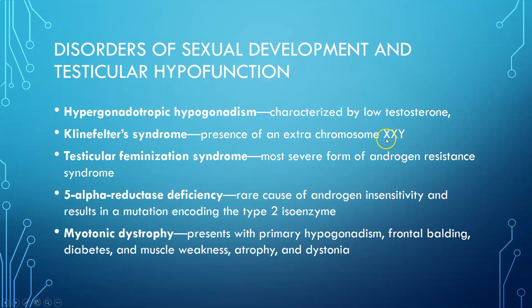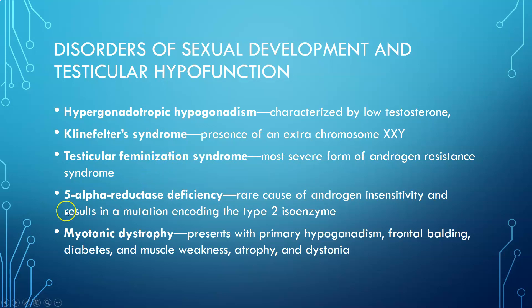There's Klinefelter syndrome — it's the presence of an extra chromosome, so we have two X's and a Y. We have testicular feminization syndrome; it's the most severe form of androgen resistance syndrome, and so they have feminization characteristics.